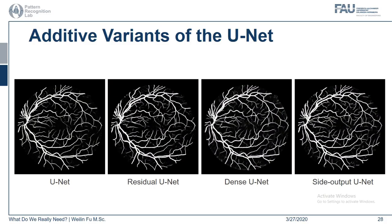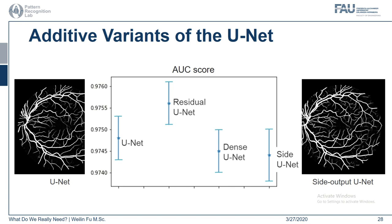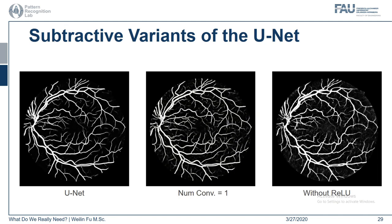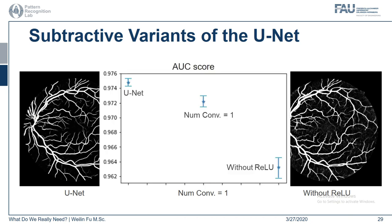We compare the vessel probability maps of different additive variants with the original UNET. Honestly, no obvious difference could be observed from visual inspection. We plot the mean and standard deviation of the ROC scores of five repetitive experiments — basically, the differences between the variants are within the range of standard deviation, so statistically the difference is very marginal. As for the two subtractive variants, only one convolutional layer in each block harms performance, but not by much — only at the scale of 10 to the minus 3. Removing the nonlinear activation functions, however, significantly impairs the network performance.